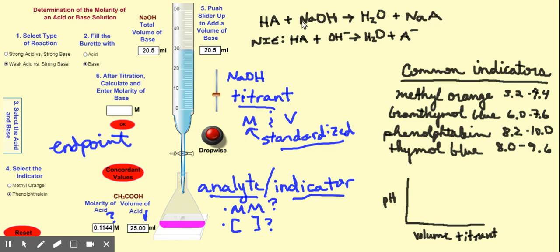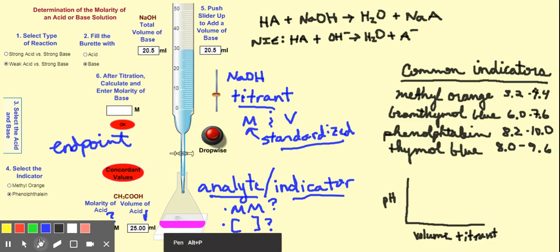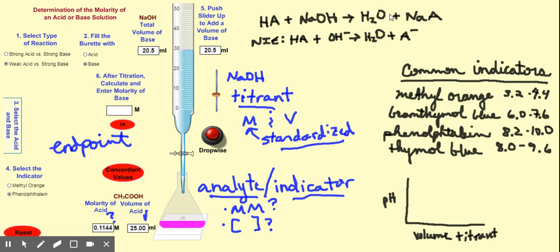This is not a net ionic equation because we need to apply solubility rules. Sodium hydroxide, being a strong base, is aqueous, and NaA — since sodium is a group one element — is also aqueous. When both products and reactants are aqueous, Na⁺ is a spectator ion. In the net ionic equation, spectator ions are removed, and we can clearly see that H⁺ is donated to the base to form water. For free response questions, always write the net ionic form.